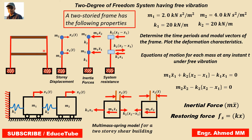This building frame we can idealize as a single column having concentrated masses M1 and M2 at the floor levels. Also, here we have to consider that the slab or girder on the floors are infinitely rigid as compared to columns, and the joints between girder and columns are fixed against rotations. We can see here stiffness are given k1 and k2.